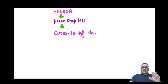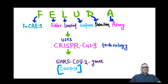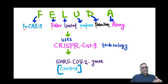What is Feluda? Feluda is an acronym. F stands for FN-Cas9, E for Editor, L for Limited, U for Uniform, D for Detection, A for Assay. So obviously here they are going to detect the COVID-19 infection or SARS-CoV-2 infection.